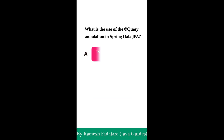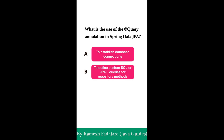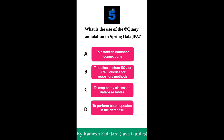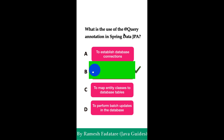What is the use of @Query annotation in Spring Data JPA? Option A: to establish database connections. Option B: to define custom SQL or JPQL queries for repository methods. Option C: to map entity classes to database tables. Option D: to perform batch updates in the database. The correct answer is option B. The @Query annotation in Spring Data JPA allows you to define custom SQL or JPQL queries directly in repository methods, providing flexibility when the default query generation is insufficient or when more complex queries are required.